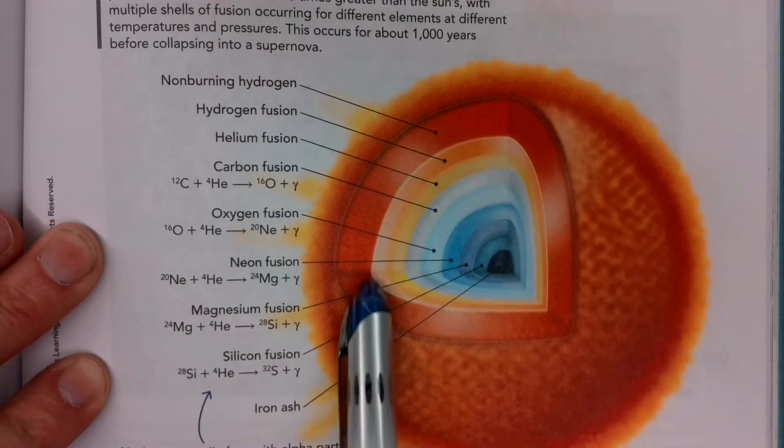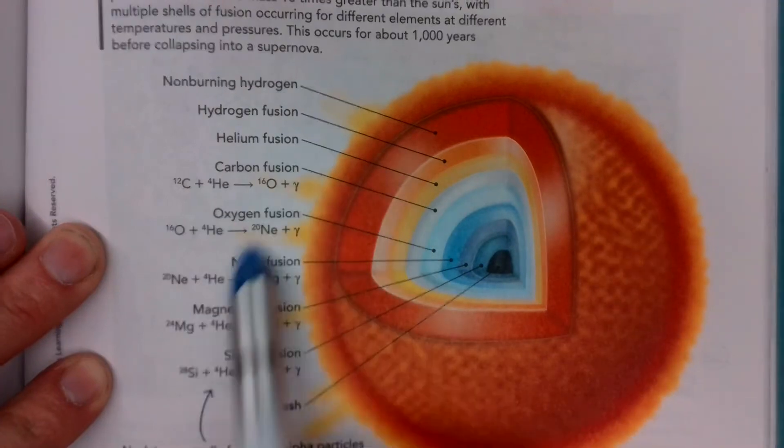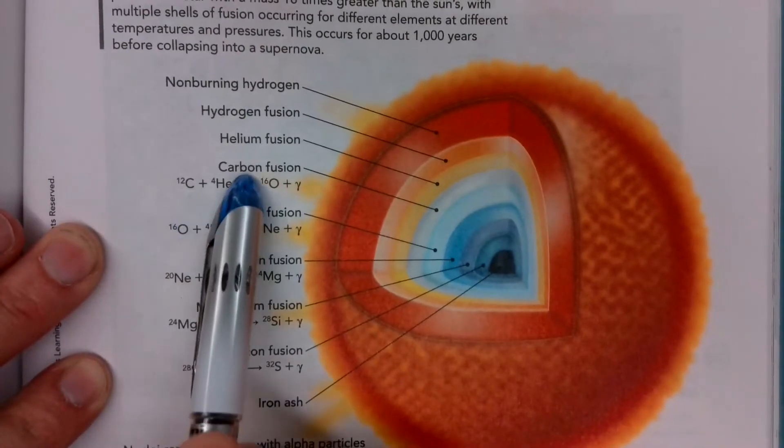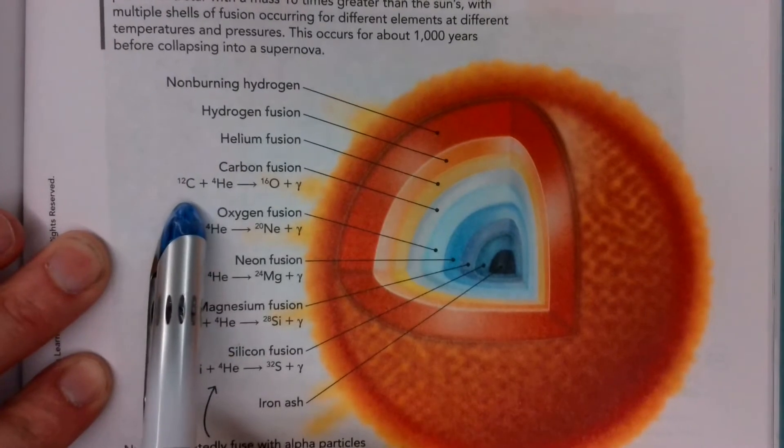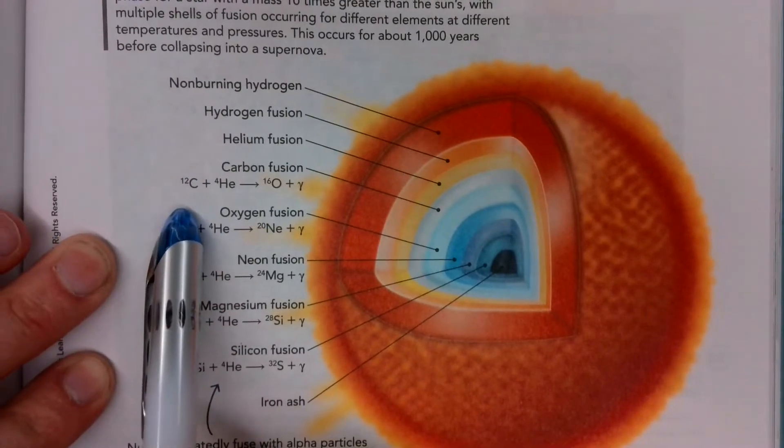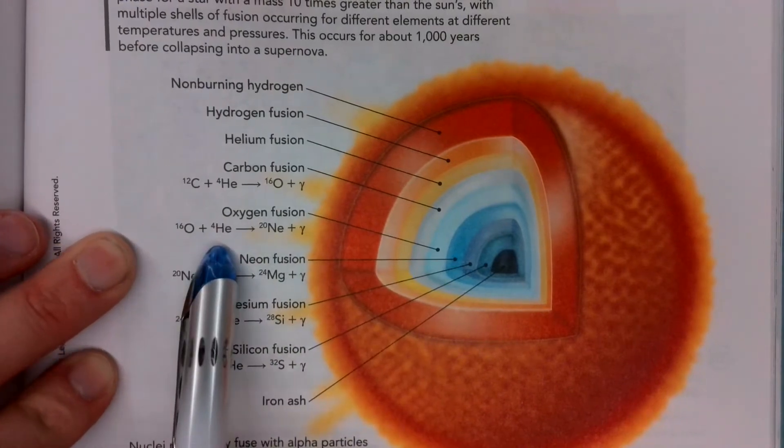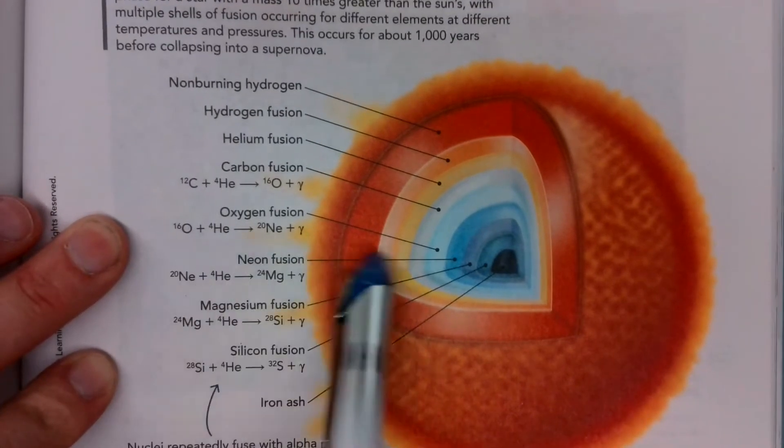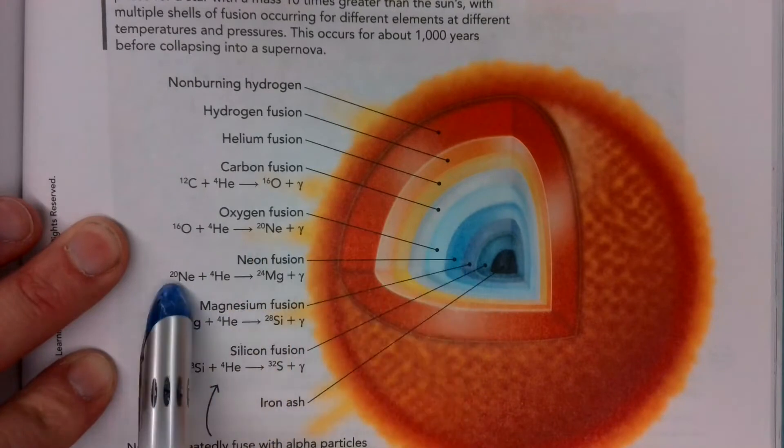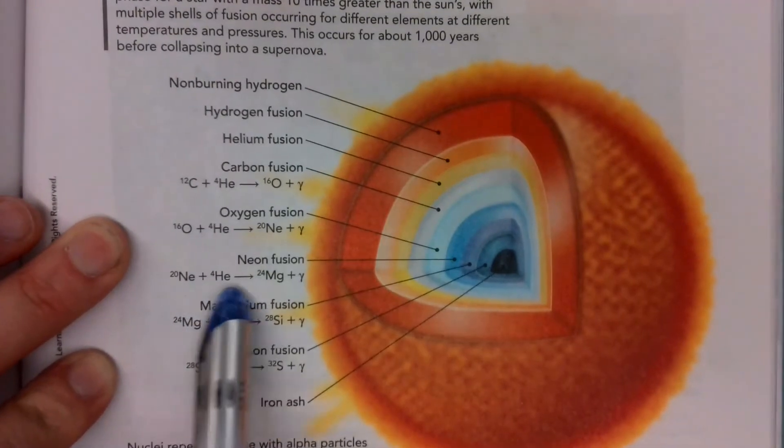On this outer surface, you're going to have hydrogen and helium fusing together. And then you can have helium fused to make carbon. That carbon can be used to make oxygen as you go deeper. That oxygen can take another alpha particle, and you can fuse that again to make neon.